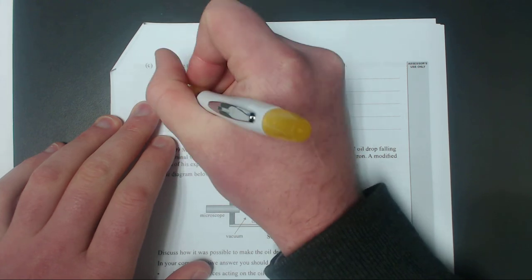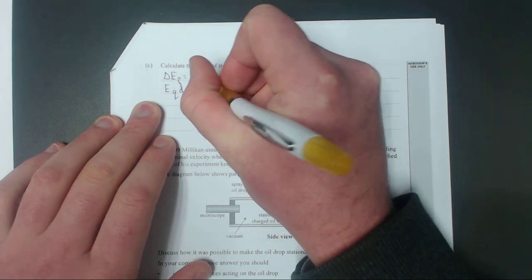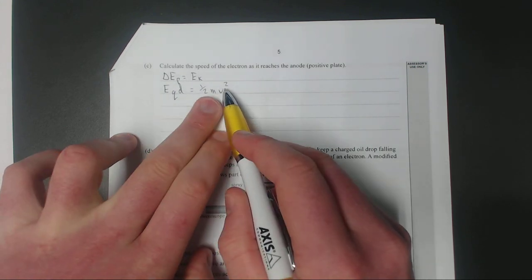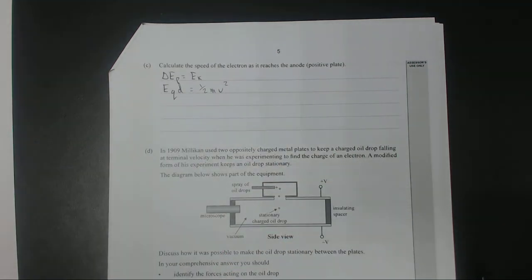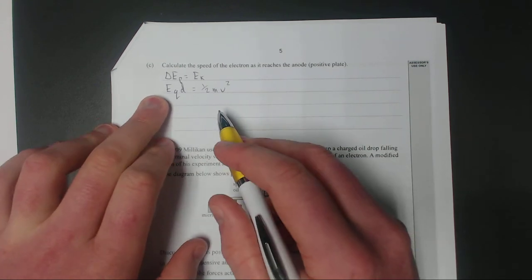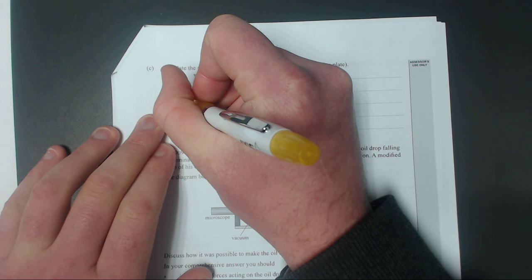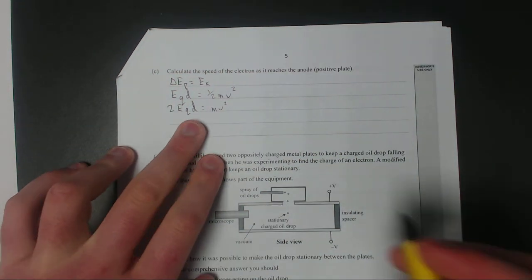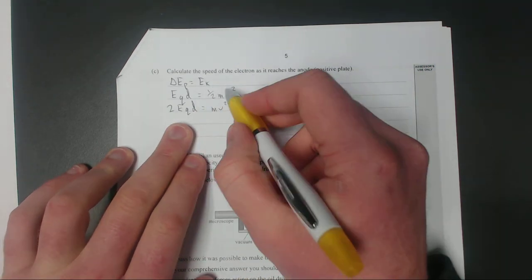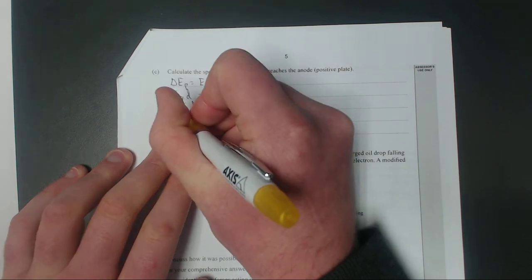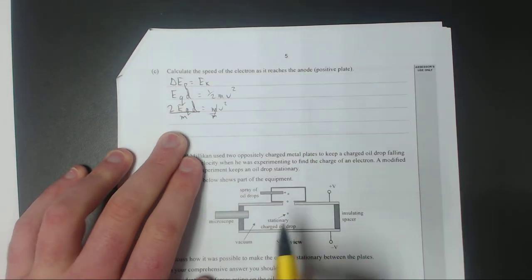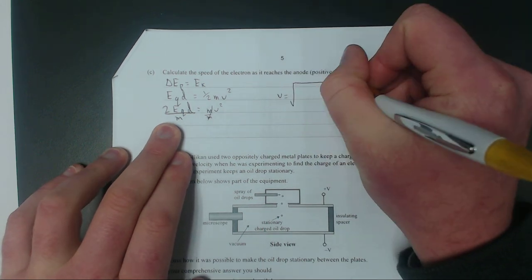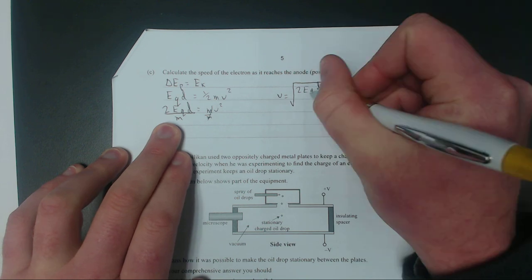So that is equal to the electric field times the charge times the distance which is equal to half mv squared. You could just work out what this number is, times it by 2, divide by the mass and then square root it. Or you can do a little bit of algebra and save yourself some work. So we're going to move the half to the other side, we're going to times both sides by 2. So we're going to have 2Eqd equals mv squared. Now we're going to divide both sides by m. Now all we're left to do is to square root both sides to get rid of the squared. And we get left with v equals square root 2Eqd divided by m.